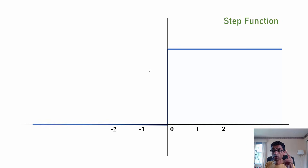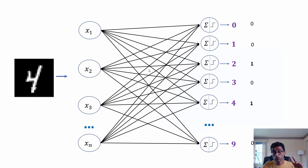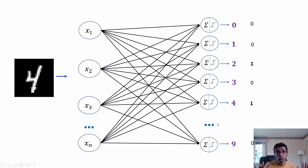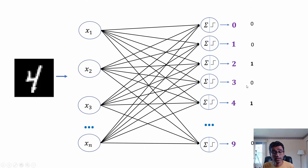The second problem with the step function is with multi-class classification. For example, with handwritten digit images and output classes 0 to 9, the step function gives only 0 or 1 outputs. You might end up getting a 1 for more than two digits simultaneously, making it impossible to determine the final class — for instance, it might say the image is both a 2 and a 4.